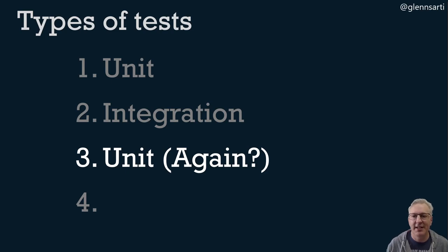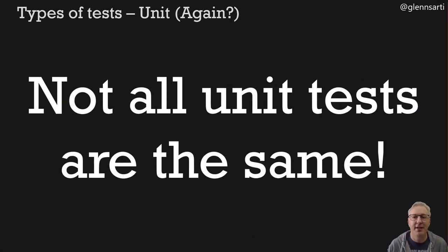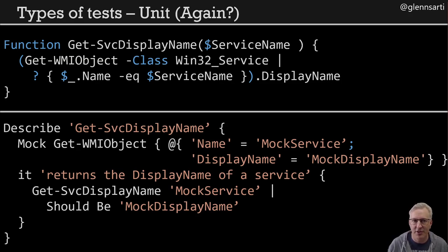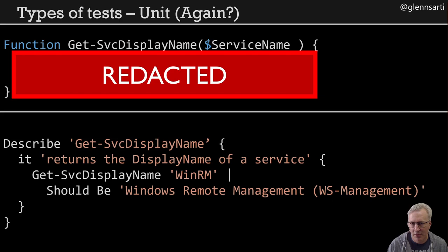Integration tests can be useful for finding subtle errors that unit tests won't see, but they come at a cost. Now, this was probably my hardest lesson: there are different flavors of unit tests. Consider this simple function that returns the display name of a Windows service and the simple test for it. The function uses a Get-WmiObject call to grab the Windows service and output the display name. The test mocks the response from Get-WmiObject so we can assert the response is what we expect. But what if you weren't given the whole function, just the header? You wouldn't know how it gets a service so you can't really do any mocks — but you can still write a test for a real Windows service common on most operating systems. Knowing how a function works changes how you test things.